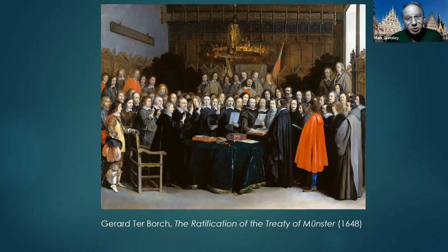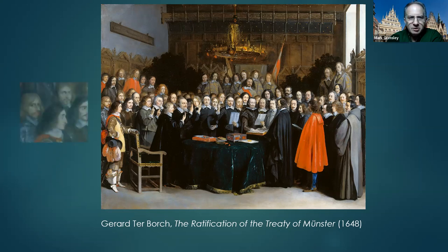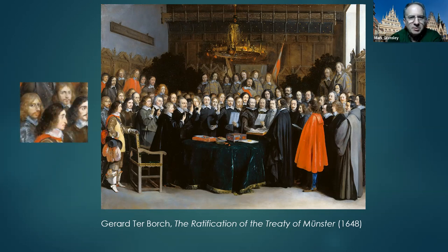He was right there because 20 specific individuals have been identified in the painting, and one of those individuals is Terborch himself. If you look all the way over to the left-hand side in the front row, you will see him — looking at you — supposedly there in person to watch what happens.